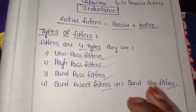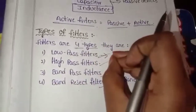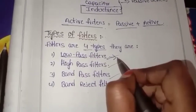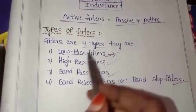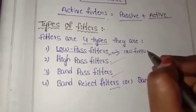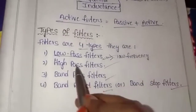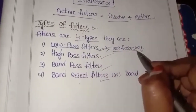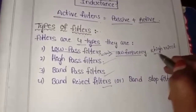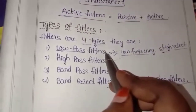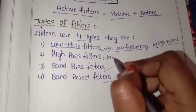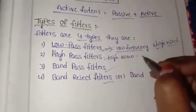Let's take a brief look at low pass filters. Low pass filters work within a frequency range. Low frequency signals pass through, and high frequency signals are rejected. So low frequency passes and high frequency is rejected.